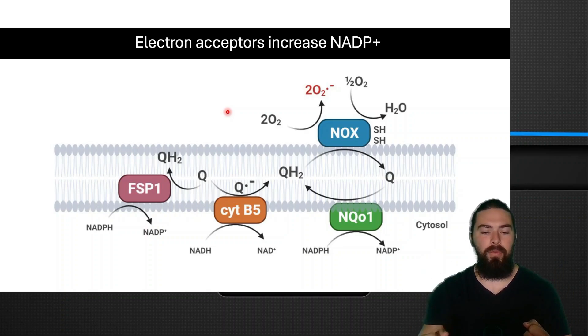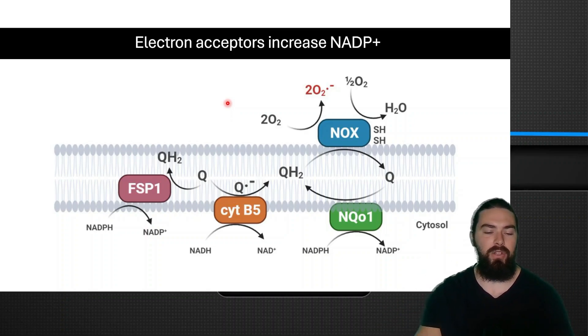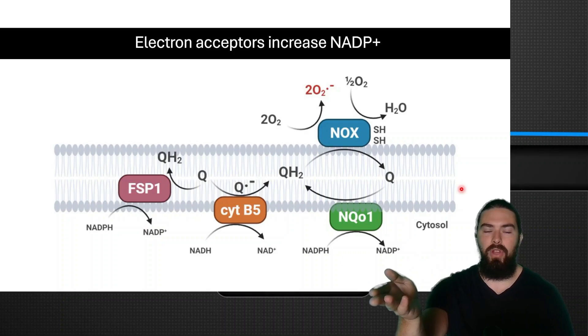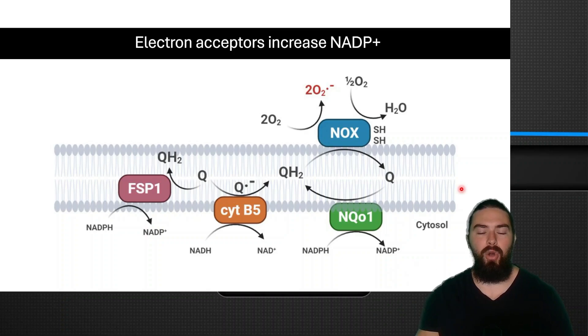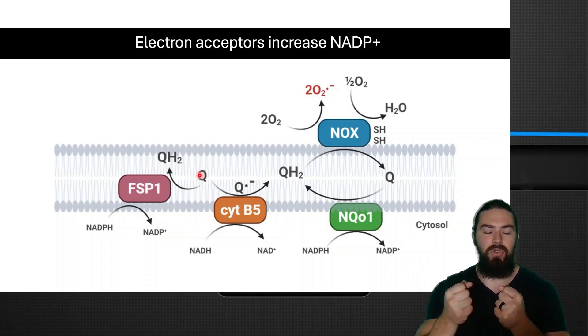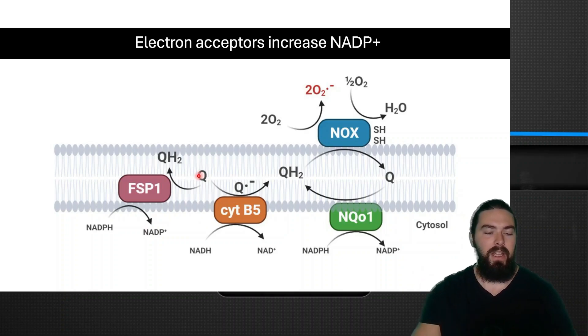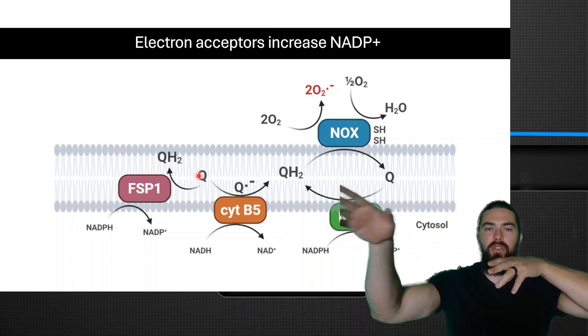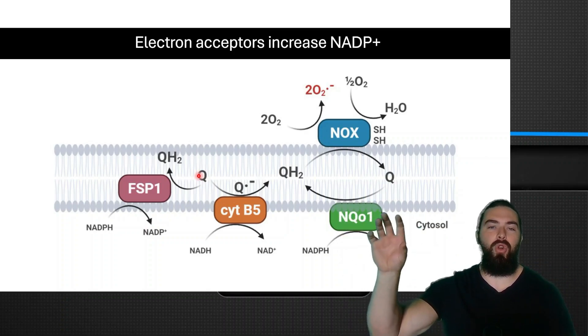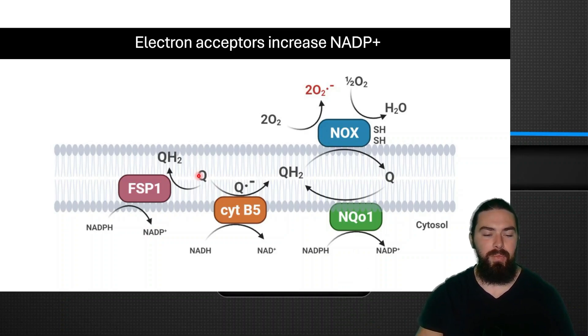They accept electrons from food and then they go and donate those electrons to the electron transfer chain in the mitochondria to produce energy. They basically go donate those electrons to coenzyme Q10 in the complexes of the electron transfer chain. So coenzyme Q10 accepts those electrons from NAD and FAD and then it passes those electrons through the electron transfer chain all the way to complex 5 where ATP is being produced.